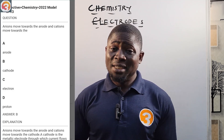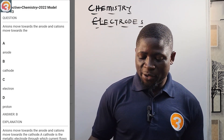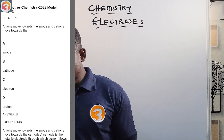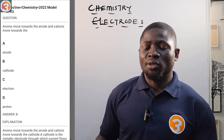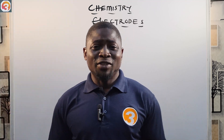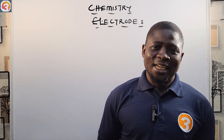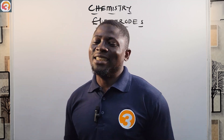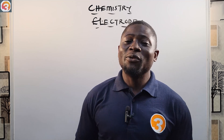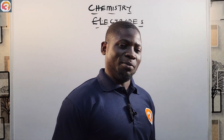This is a 2022 question, number 13, being displayed on the screen right now. It says: anions move towards the anode, and cations move towards the... giving options: A) anode, B) cathode, C) electron, D) proton. We are going to come back to this question after we are done studying electrodes.